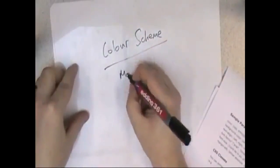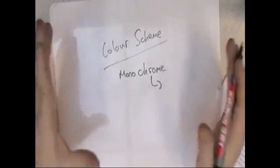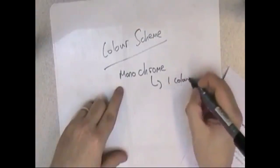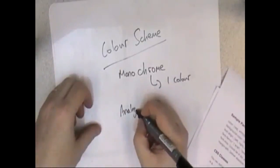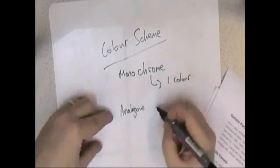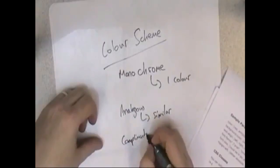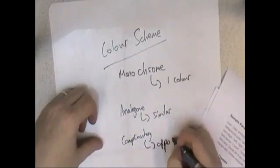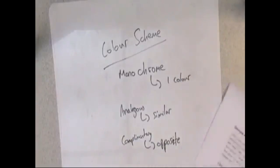The other thing is color schemes. There are three major types. Monochrome — 'mono' meaning one, 'chrome' relating to color — uses just one color, such as black and white or shades of red. Analogous means similar colors, for example lots of shades of blue on the same page. Complementary uses opposite colors on the color wheel — blue and yellow are complementary — providing strong contrast. There's a fantastic document on the AQA website listing everything you're expected to learn, so have a look through to make sure you're familiar with all of it.